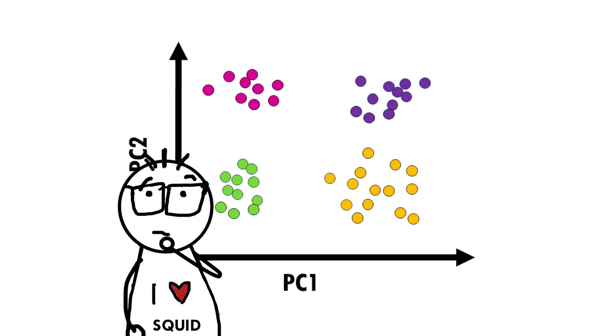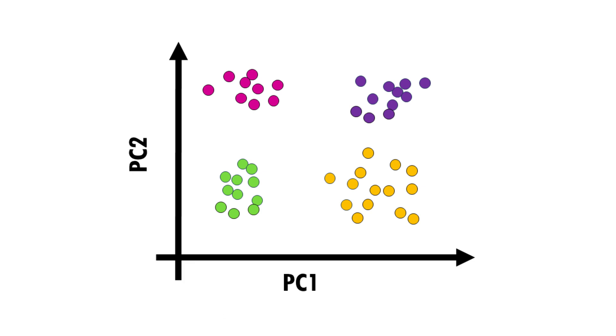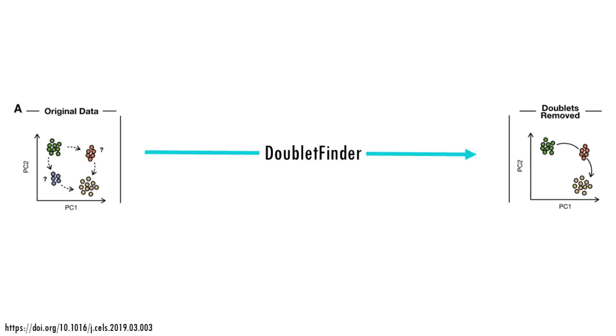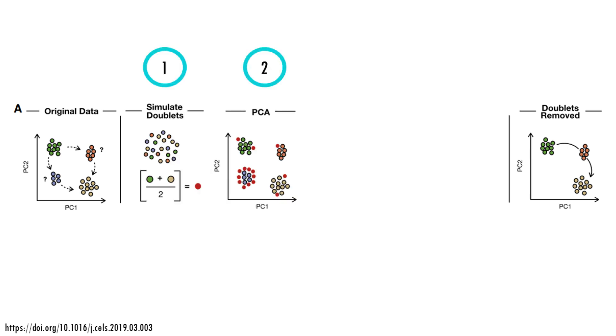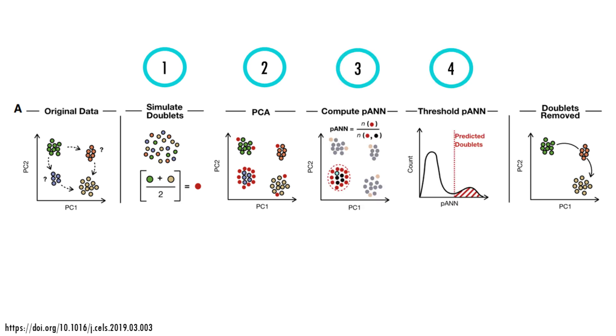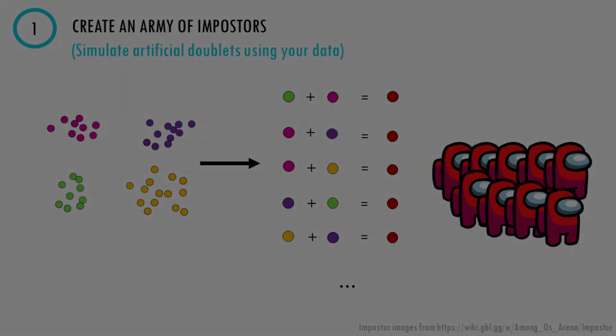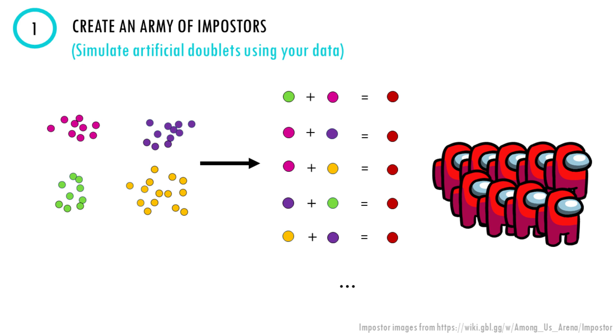A lot of tools have been developed that infer doublets from the expression profiles, such as DoubletFinder. So how does DoubletFinder work? There are basically four main steps. In step one, DoubletFinder generates artificial doublets from existing single-cell RNA sequencing data that has been processed using the Seurat analysis pipeline. So it basically combines cells from your dataset together to make up these artificial doublets.